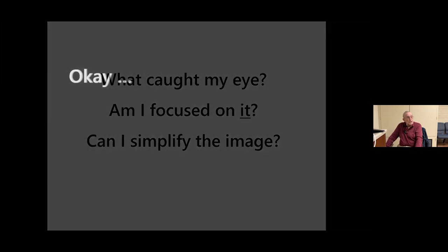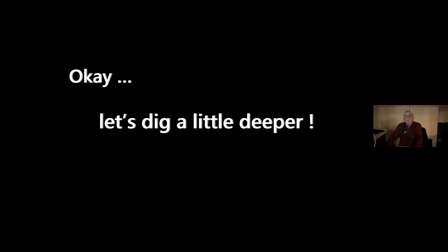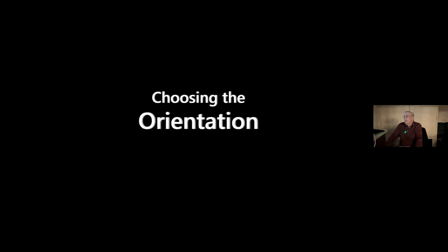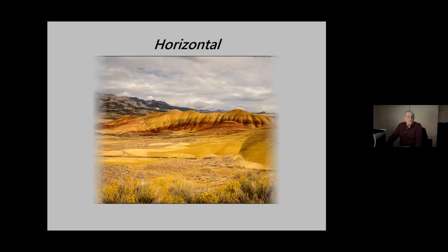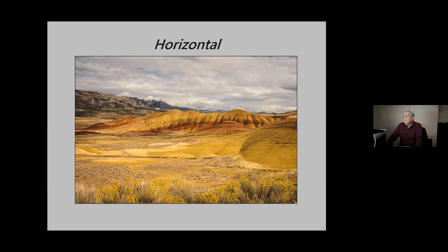I put a handout together that is merely an outline of the points I'm going to cover — there will not be a test at the end. The first thing I'm going to look at when I take a picture is how I'm going to orient the camera. Do I want the camera horizontal — landscape, as the modern term goes — or do I want it vertical, portrait orientation? So the first thing I've got to do is decide which way I'm going to turn my camera.